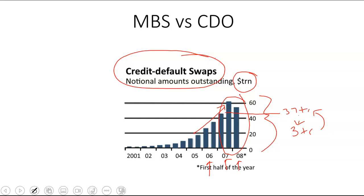So hopefully this explains the difference between mortgage-backed securities and CDOs. A CDO is simply a repackaged mortgage-backed security.